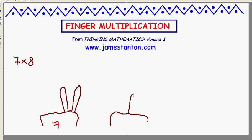To make 8, start with a closed fist and raise three fingers. There's a representation of the number 8. So here we are, 7 and 8.